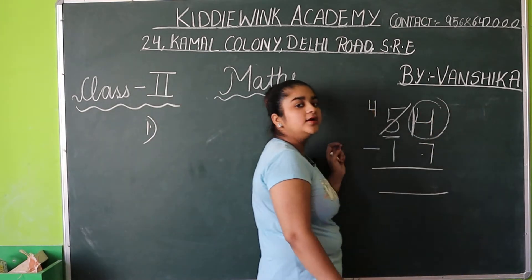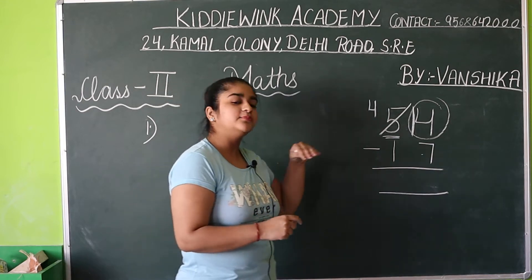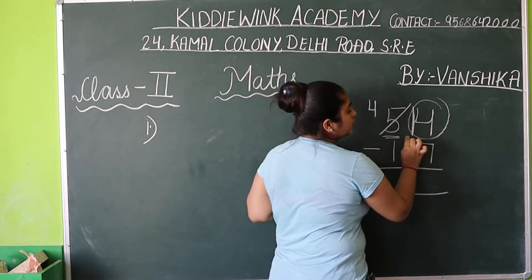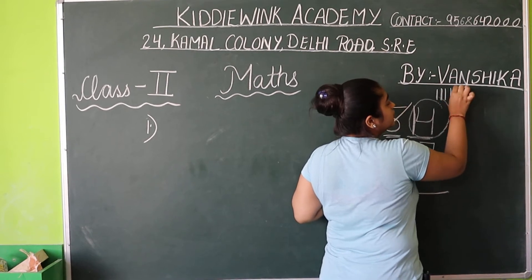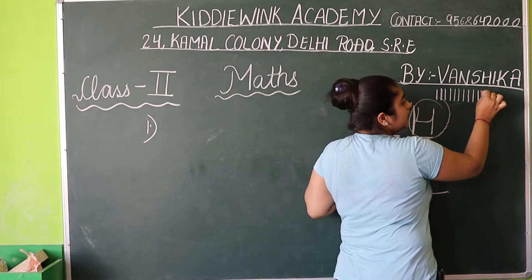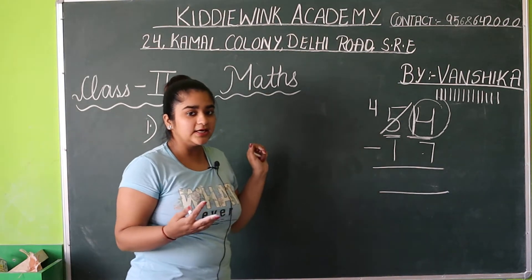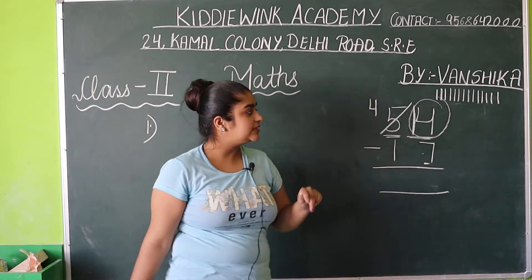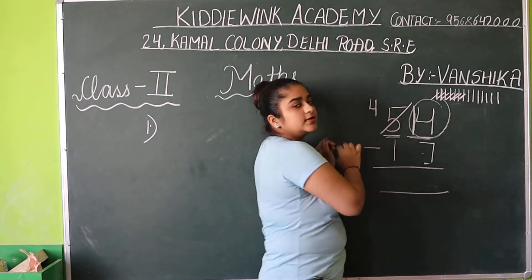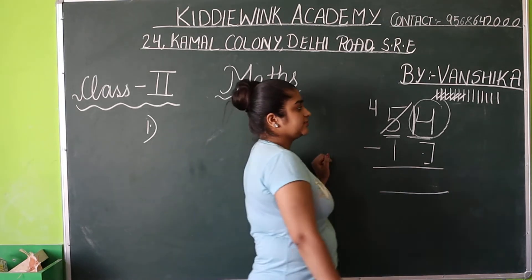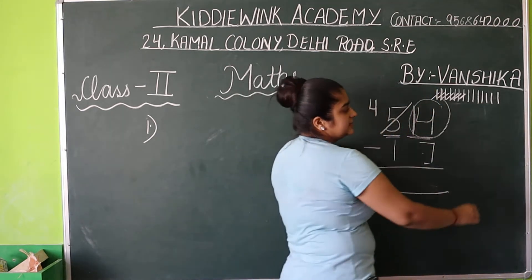Second method is: kya aap 14 lines draw karke, phir 7 ko us mein se cut kar sakti ho, phir count kar sakti ho ki kitni aapki leftover hai. Ab kya bacha yahan pe digit hai? 14. To aap yahan pe kitni lines draw karenghi? 14. 1, 2, 3, 4, 5, 6, 7, 8, 9, 10, 11, 12, 13, 14. Ab humne ye lines kitni draw karein? 14. Hamein is mein se subtract kitni karni hai? Minus kitni karni hai? 7. Ab is mein se hum 7 lines ko cut kar dein. 1, 2, 3, 4, 5, 6, 7. Cut kar dhi. Ab leftover dekhenge ki yahan pe kya bacha hai? 1, 2, 3, 4, 5, 6, 7. Kitni bachy hai? 7.